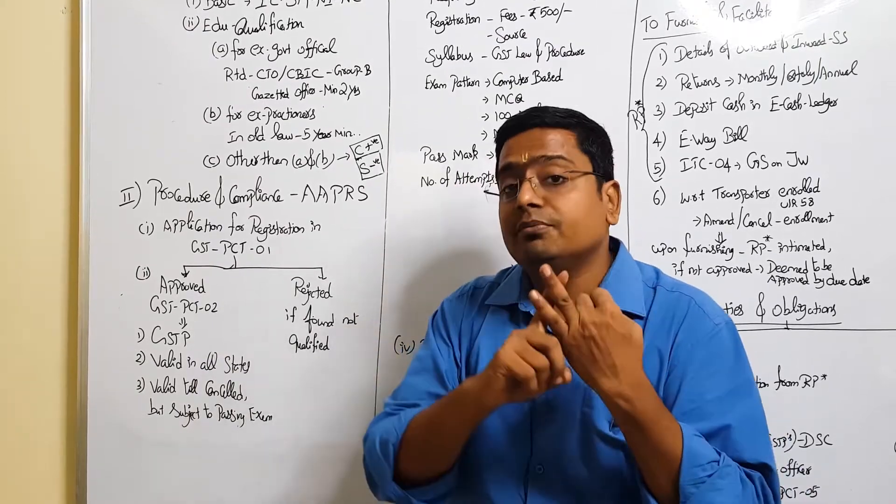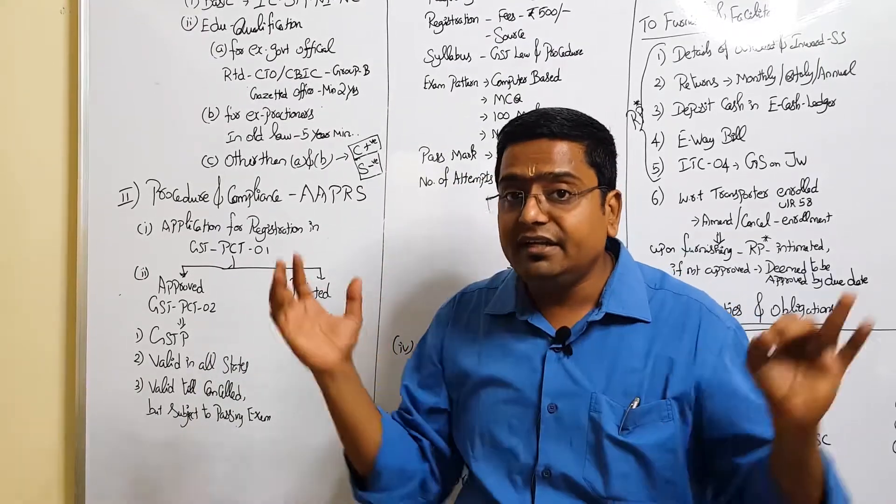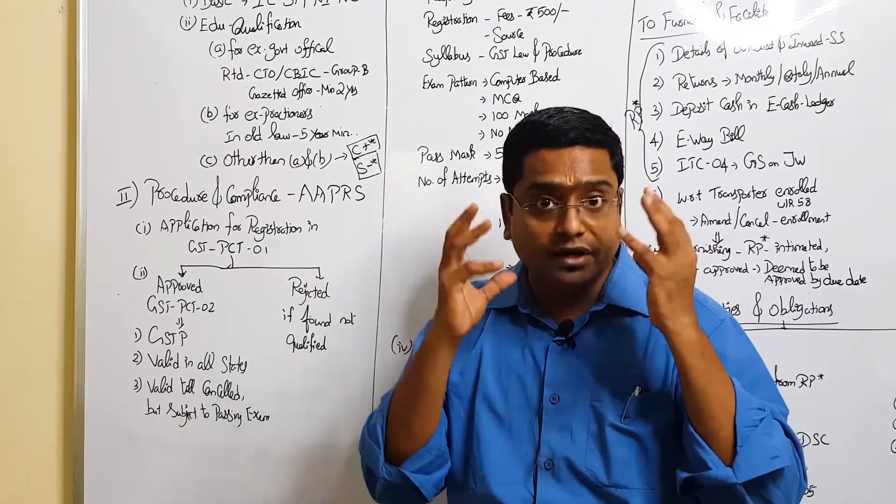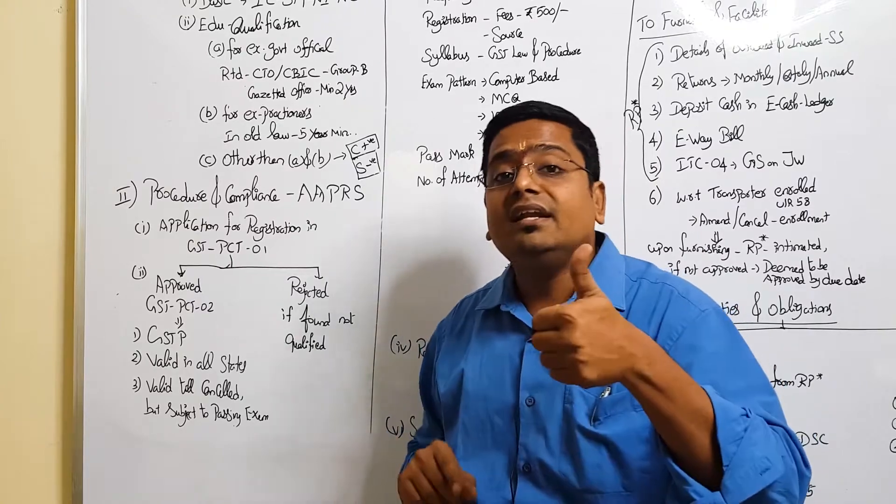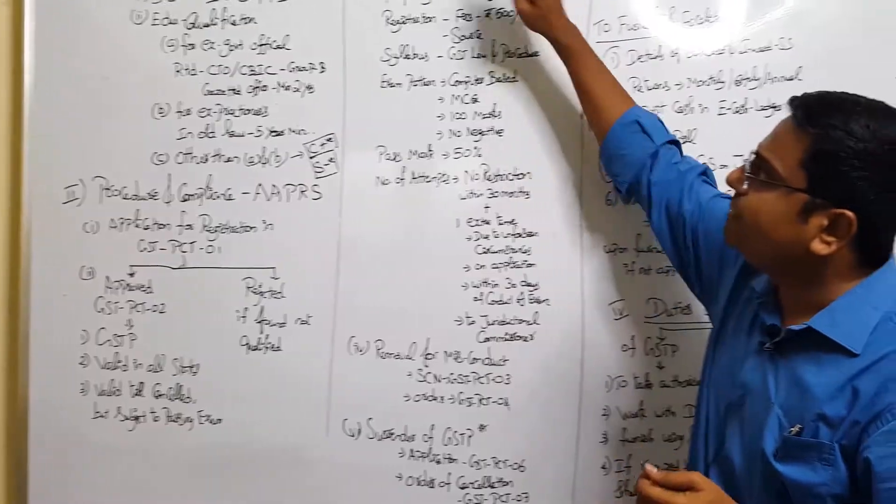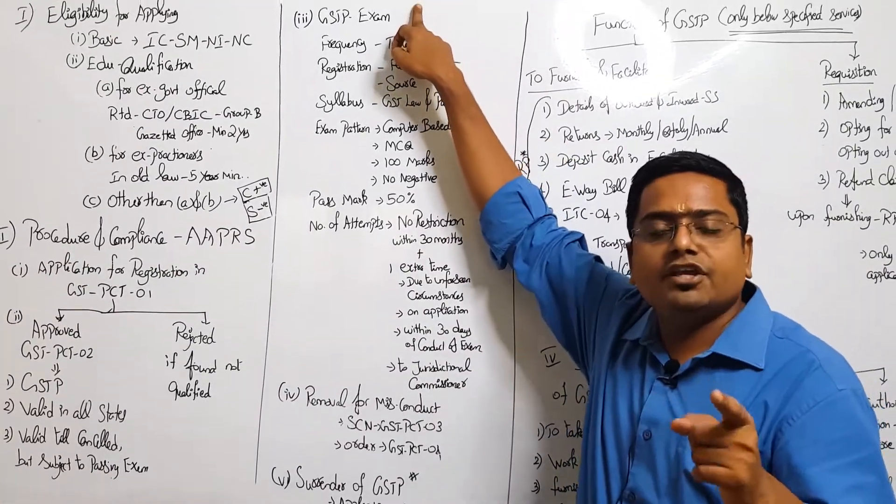And once approved, please appreciate this particular person who made an application - point number one will be called as a GSTP. Point number two: his application is valid for the entire India, all over India, meaning thereby it's a centralized registration, one registration for all over India. And number three: it is valid until it's getting cancelled, but subject to passing the NASCENT examination.